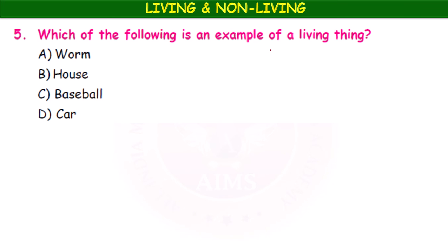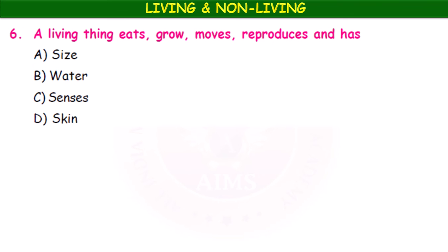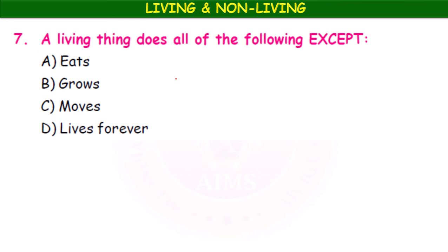Which of the following is an example of a living thing — worm, house, baseball, or car? Options B, C, and D are non-living; A (worm) is the living thing. A living thing eats, grows, moves, reproduces, and has senses. Next: a living thing does all of the following EXCEPT eats, grows, moves, or lives forever. The answer is 'lives forever', because every living thing has to die.